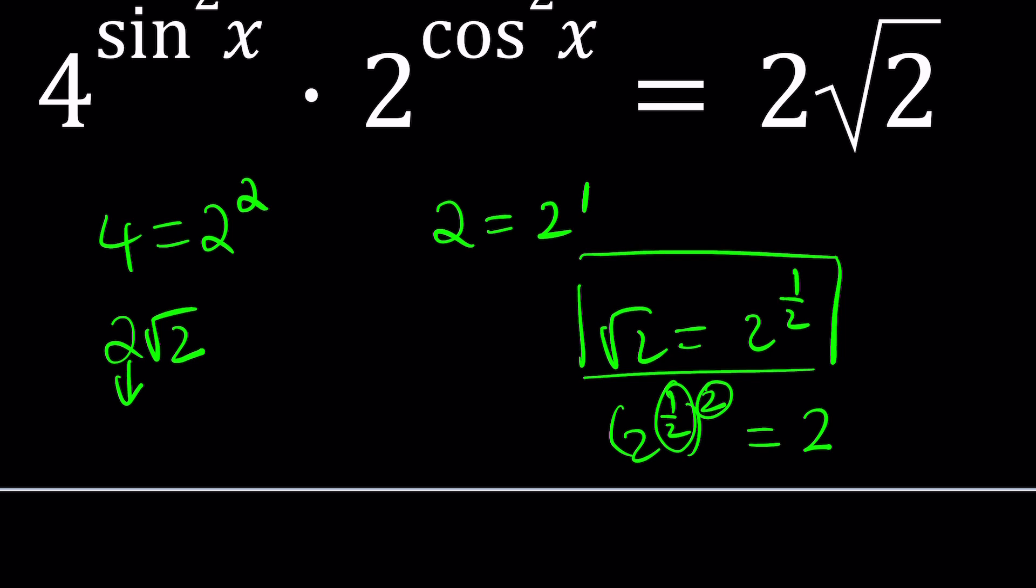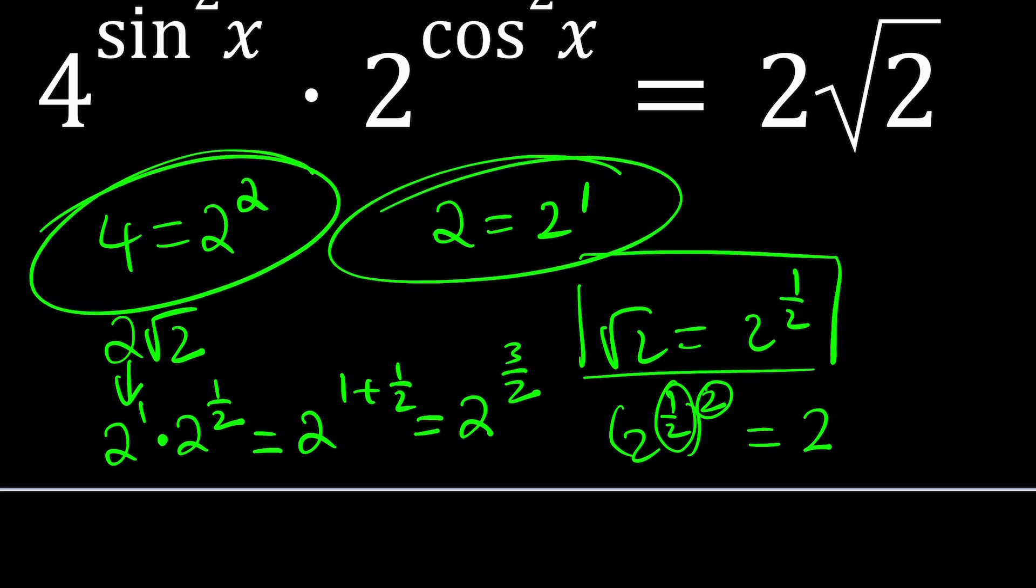So here we kind of have two things. We have 2 to the first power and 2 to the power of 1 half that comes from the square root of 2. When you put those together, using properties of exponents, we get 2 to the power 1 plus 1 half, because we add the exponents, and that is 2 to the power 3 halves. Now we have everything we need.